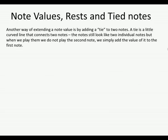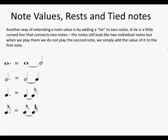Another way of extending a note value is by adding a tie between two notes. A tie is a little curved line that connects two notes — the notes still look like two individual notes, but when we play them we don't play the second note; we simply add its value to the first note. So a dotted semi-breve would equal a semi-breve tied to a minim — they sound exactly the same because of that tie; we wouldn't play the minim, we just add its value to the first note.